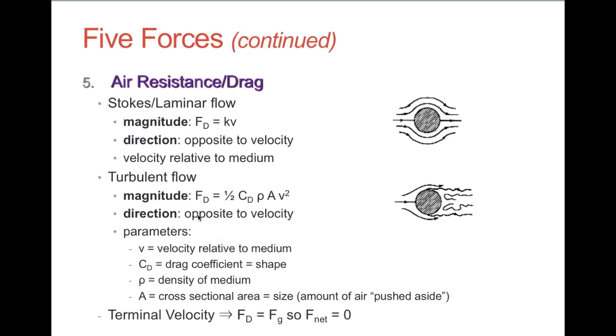So, in short, the air resistance depends on the size of the object, or how much air has to get pushed out of the way, the shape of the object, which determines the drag coefficient, or how aerodynamic the object is, how efficiently it can push the air out of the way, and the speed of the object relative to the air, which is how rapidly do I have to push that air out of the way to go through it, and obviously also depends on how dense the air is.